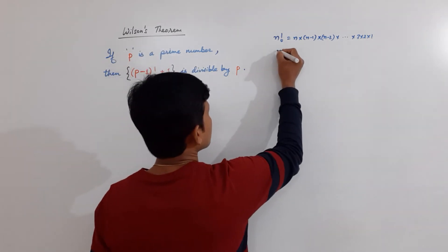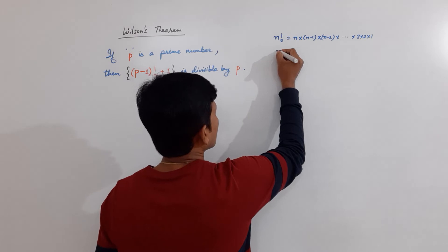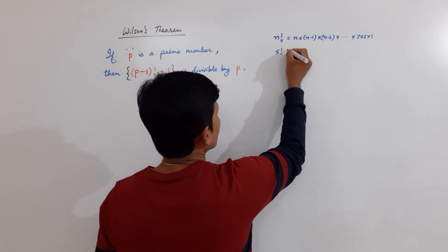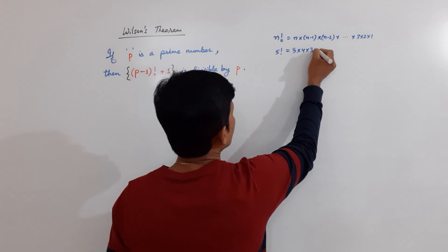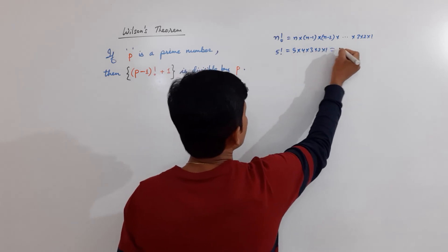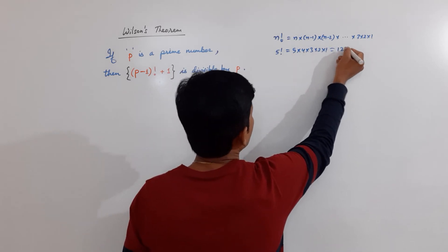So, for example, suppose I take, like if I have factorial of 5, this means 5 times 4 into 3 into 2 into 1, which is equal to 120.